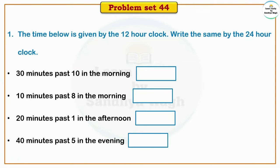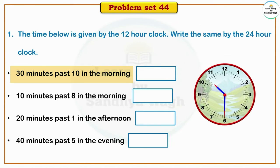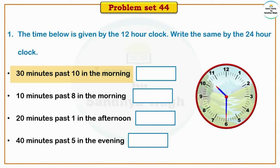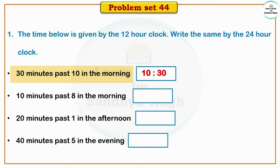Now let us solve Problem Set 44. The time below is given by the 12-hour clock; write the same by the 24-hour clock. The first time given is 30 minutes past 10 in the morning — this is shown as 10:30 in 12-hour clock. In the 24-hour clock, 30 minutes past 10 in the morning is shown as 10.30.